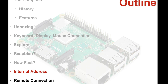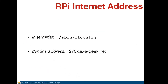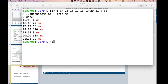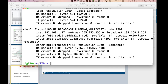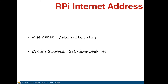To find the IP address of the Raspberry Pi, type '/sbin/ifconfig' in the terminal. There's a long output: eth0 is the Ethernet cable — I'm not connected by cable so there's no connection there. WLAN0 is the Wi-Fi network, and I'm connected. My address is 192.168.1.17 — that's my IP address. The dyndns.org service associates my hostname '270a.is-a-geek.net' with that IP address 192.168.1.17.